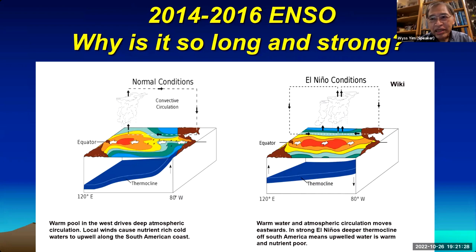Moving on to the long and strong ENSO in 2014 to 2016, ENSO events are very tricky. In this case, why is it so long and why is it so strong? Normally ENSO occurs around Christmas time — that's why the name El Niño, the Christ Child. But in this case, it reached a peak in August, far from December. So we have to look at the differences.